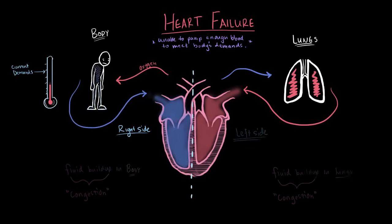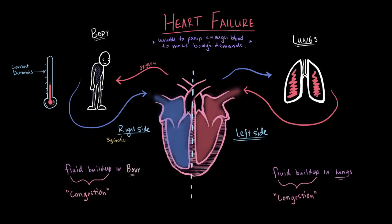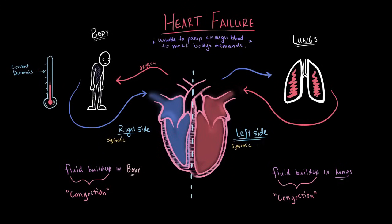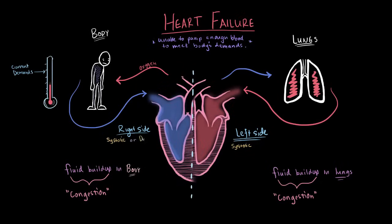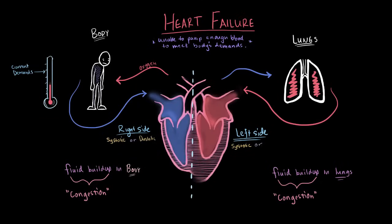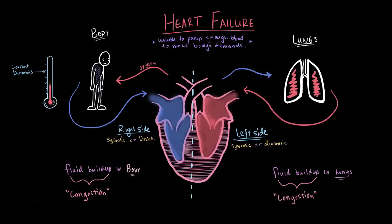As a quick recap: you could have systolic failure on the right side only, or on the left side only, or both. In the same way, you could have diastolic failure on the right side only, or the left side only, or both. It's even possible to have a combination of systolic and diastolic failure.